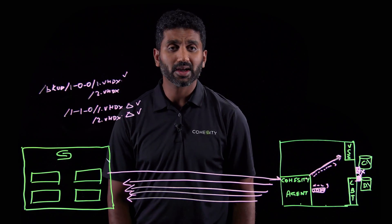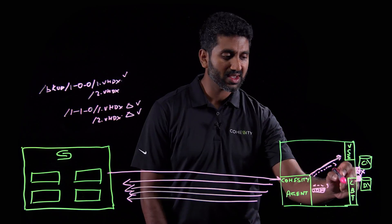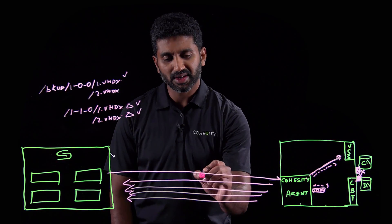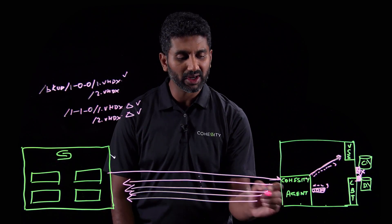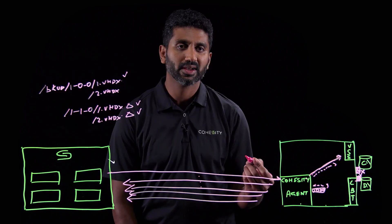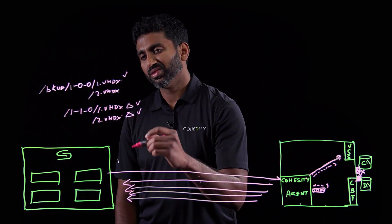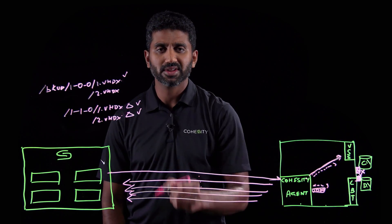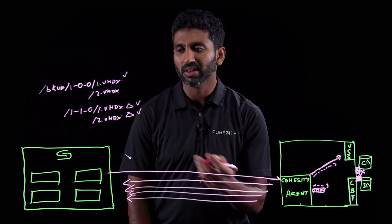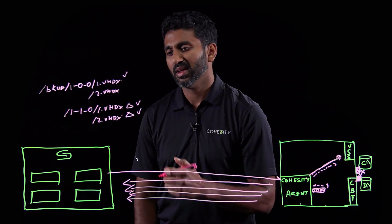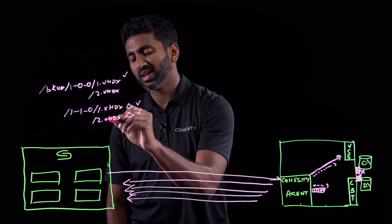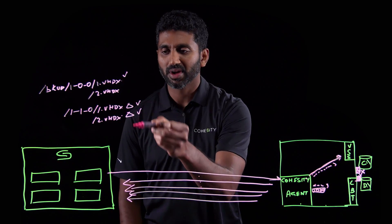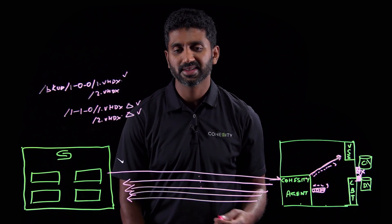I'd like to conclude by highlighting a few key points. First, Cohesity's CBT driver on physical servers enables incremental backup of the volumes. Second, Cohesity's ability to pull data across parallel streams improves backup time. Third, Cohesity stores files in VHDX format, which enables P2V workflows and directly attaching backup data onto a server. And lastly, instant cloning is possible because of Cohesity's SnapTree technology, making all backup job runs available for instant access at any point in time.